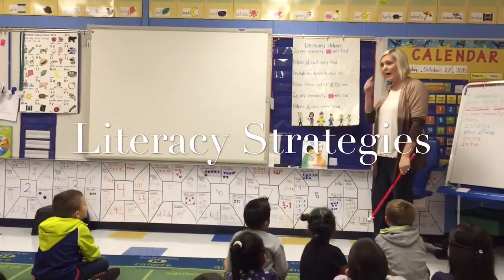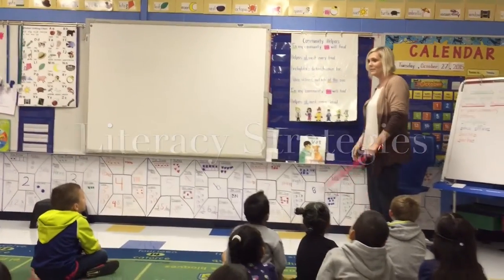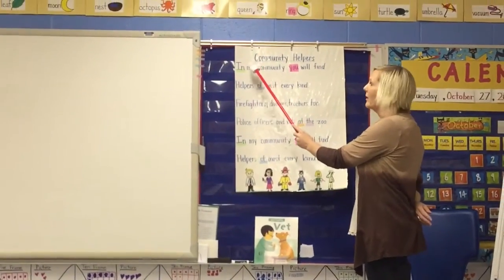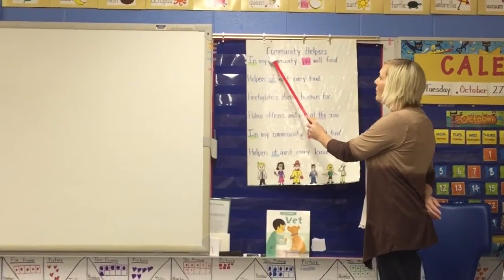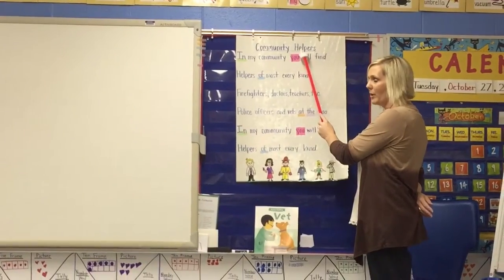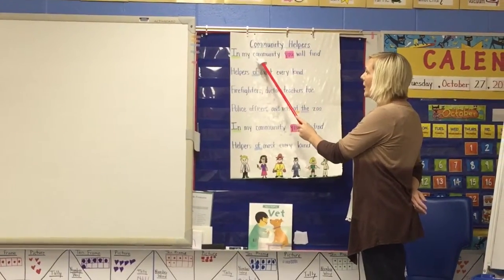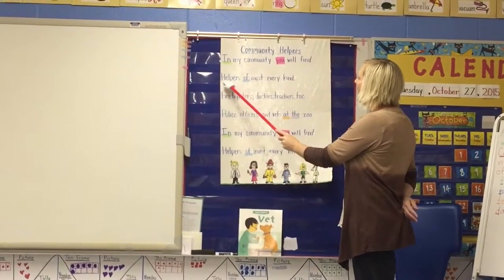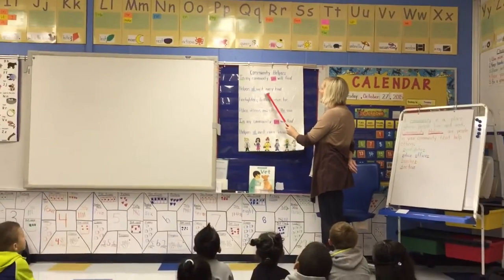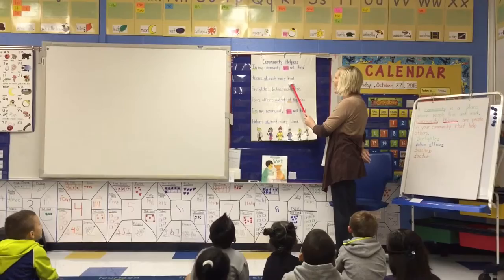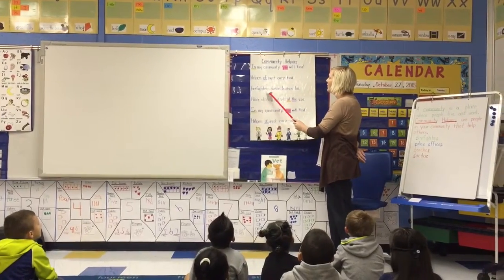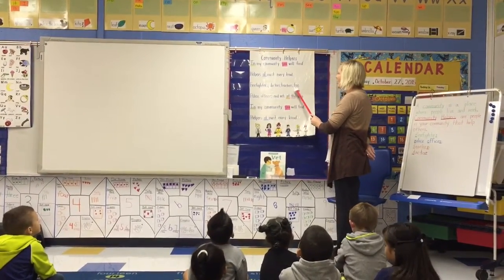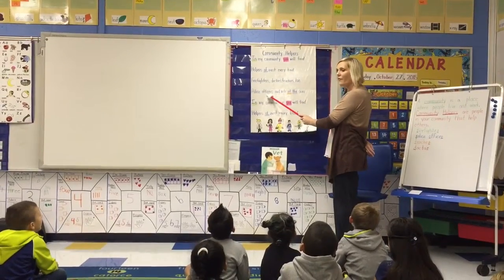Eastside teachers provide the range of experiences and the instruction necessary to help children become good readers and writers. Reading and writing are interrelated — what is learned in one area makes it easier to learn in the other. During shared reading, an enlarged text like a big book or poem is used so all children can see. The children participate in purposeful reading and learn critical concepts of how print works.